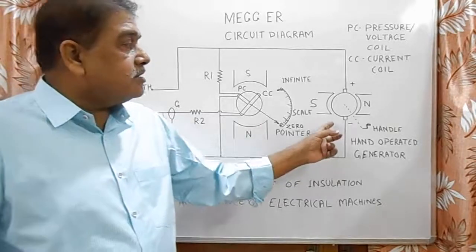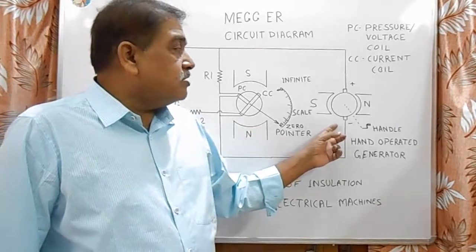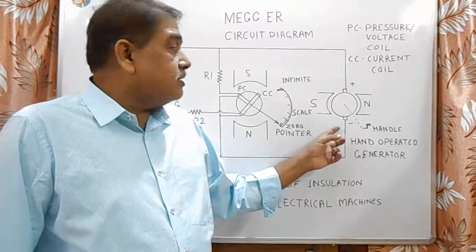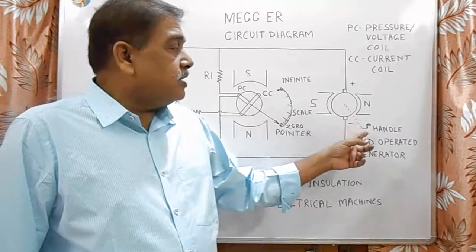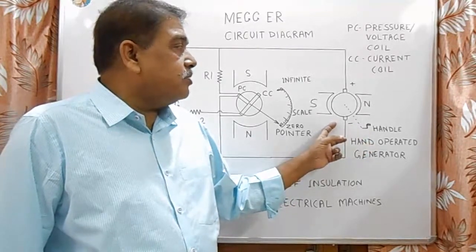This hand operated generator has a clutch system which controls the maximum speed of this generator. When we rotate the handle at maximum speed, this generator is rotated only at 140 rpm.